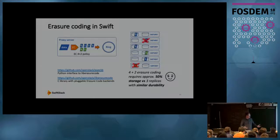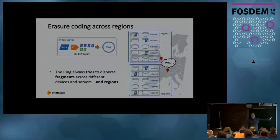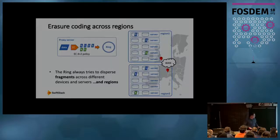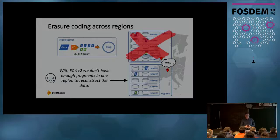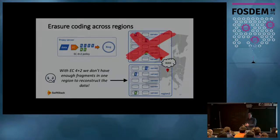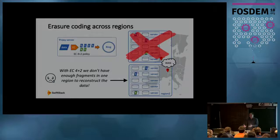What was the problem with distributed clusters? Adding regions back into the storage pool with a four-plus-two erasure coding scheme, the ring disperses the six fragments uniformly across the two regions — leaving only three fragments in each region. But we need four fragments to reconstruct the object. So we don't have our disaster recovery durability property: if we lose one region, we don't have sufficient fragments in the other. Although four-plus-two gives similar durability to triple-replica in a single site, in a multi-region case it's not enough.